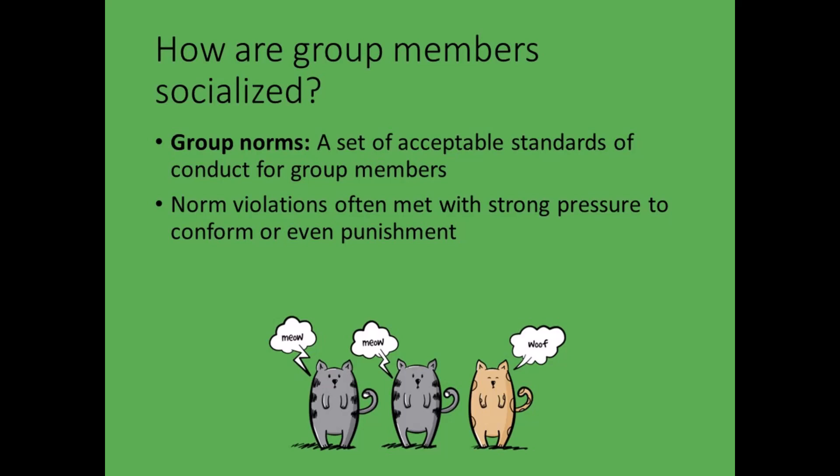Because humans are not machines, and because many other factors influence our behavior, we do not always follow the established group norms. When we violate these expectations, the outcomes we experience shape our future behavior. Sometimes other group members will pressure us to conform. Other times, they may punish us by avoiding us, isolating us from others, or gossiping about us. In the U.S., extreme violations, such as criminal offenses, are punishable by fines and incarceration. In some states and in other nations, some of these violations may be punishable by death.